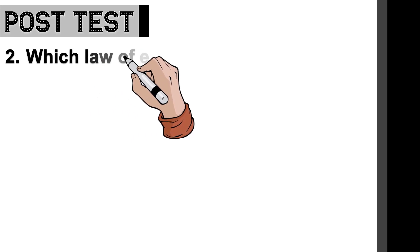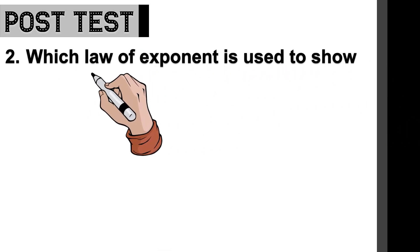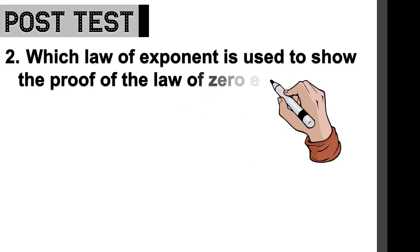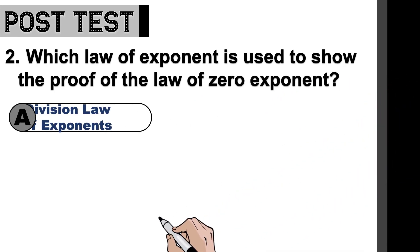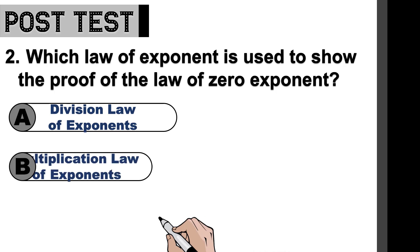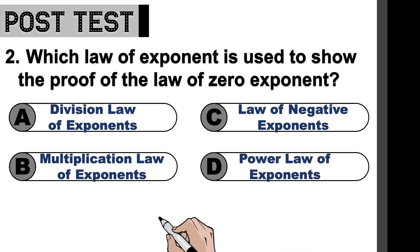Question number two: Which law of exponents is used to show the proof of the law of zero exponent? Is it A, the division law of exponents? B, the multiplication law of exponents? C, the law of negative exponents? Or letter D, the power law of exponents? Go.